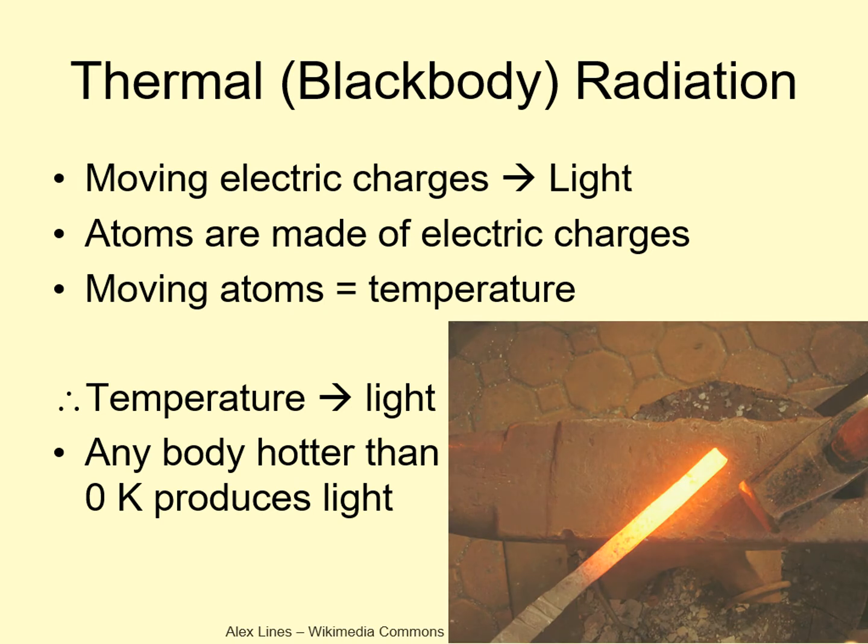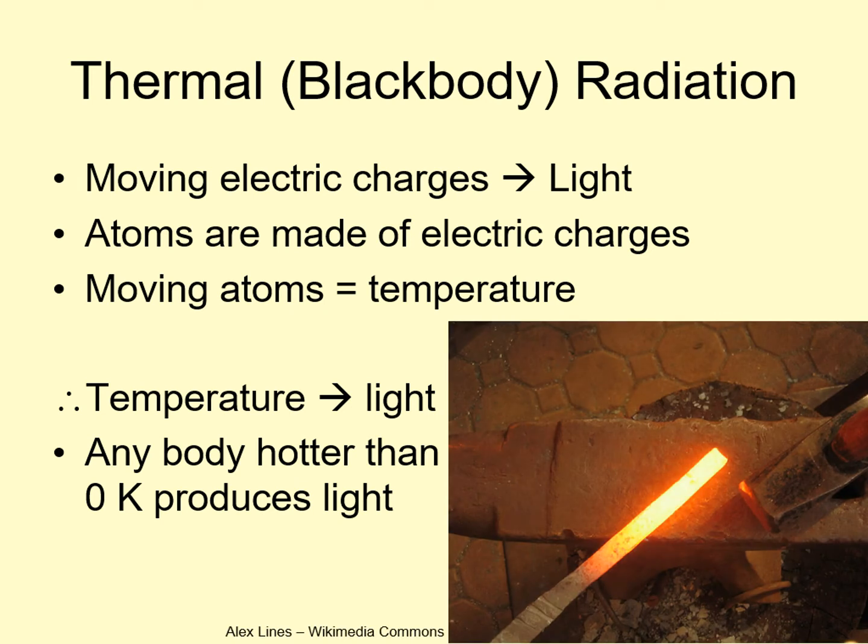If you heat up a piece of metal, you can see an example of this. As it starts getting hot enough to glow, you start to see a faint reddish color. As it gets hotter, it gets brighter, and the color moves toward orange or yellow.